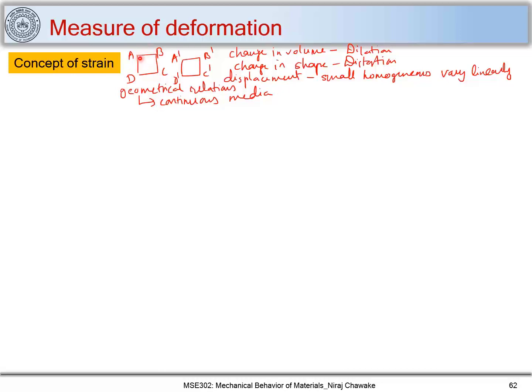You can find these displacements using geometrical relations and apply them to a continuous media. The displacements of ABCD to A dash, B dash, C dash, D dash vary linearly with their positions. Strain is a measure of deformation. If you recall when we discussed the stress-strain curve, the strain corresponding to fracture stress is called fracture strain, and we considered it as a measure of deformation.